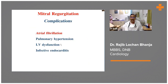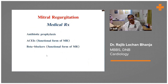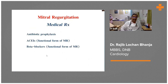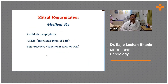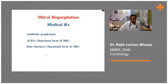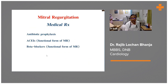Atrial fibrillation is the commonest complication, followed by pulmonary hypertension, LV dysfunction, and infective endocarditis. Infective endocarditis may be a cause of mitral regurgitation, or mitral valve disease can lead to infective endocarditis — so the relationship is bidirectional.